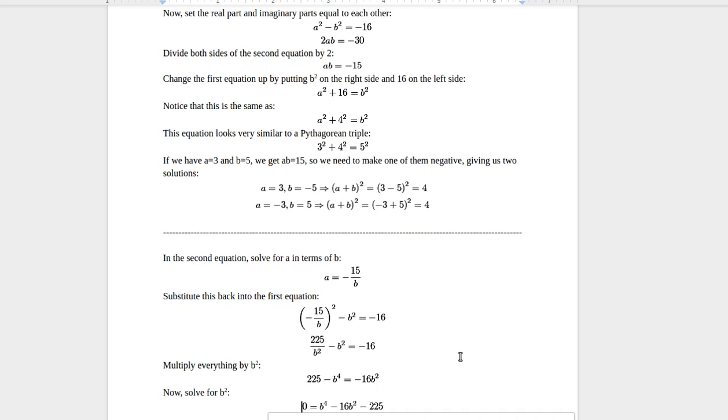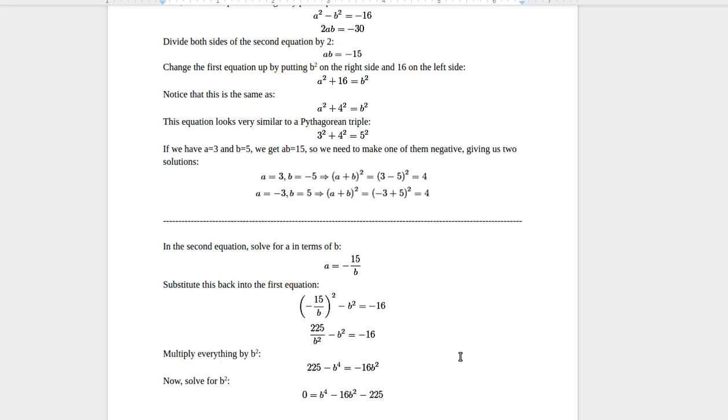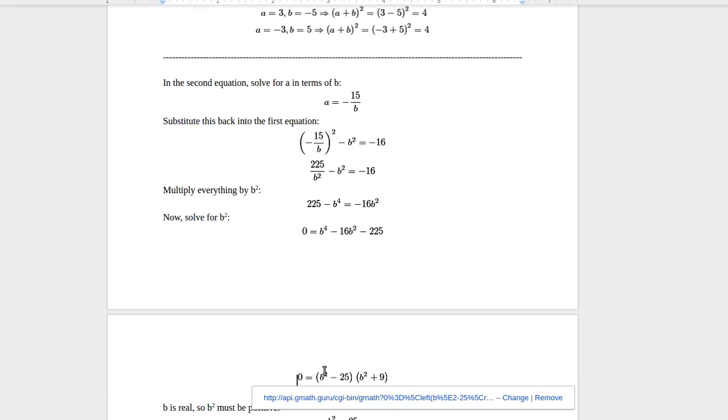Now we need to factor this. We know that 225 is 15 squared. So if we guess and check factors, we can get positive 1, negative 225, positive 5, negative 45, positive 3, negative 75, positive 9, negative 25. That works. So we get b squared plus 9 and b squared minus 25.